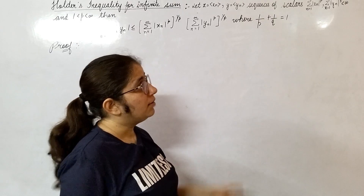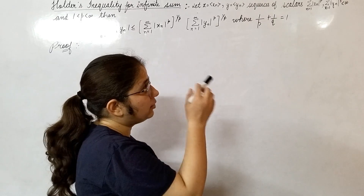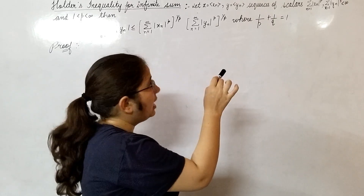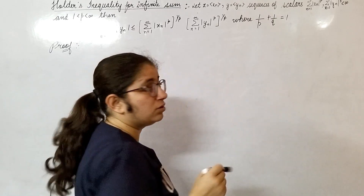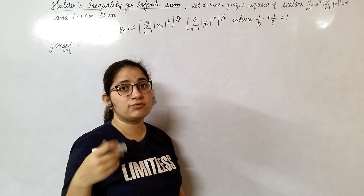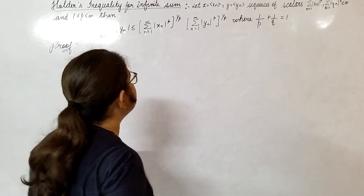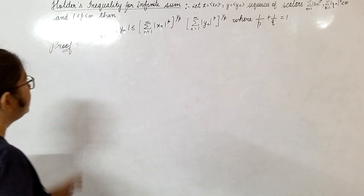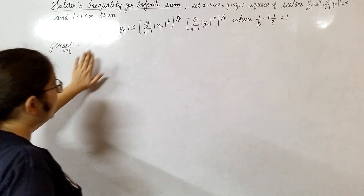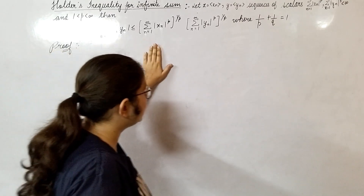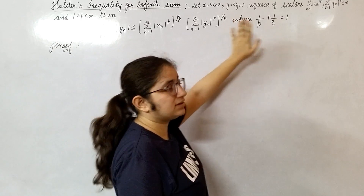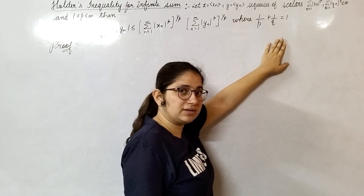This boundedness statement is very important for the proof of Hölder's inequality for infinite sums. With the help of this and Hölder's inequality for finite sums, we will show the inequality for infinite sums, where this is the relation between p and q.